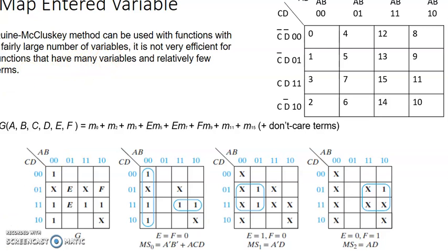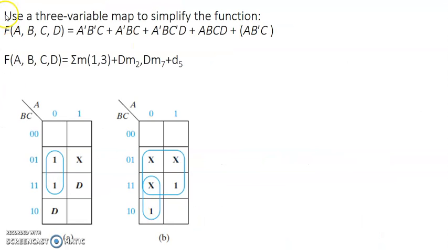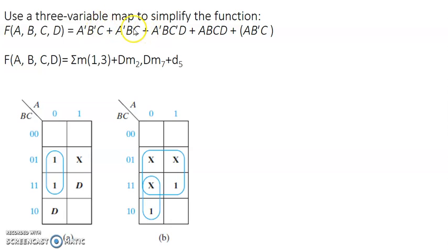With this method we can reduce the drawback of Quine-McCluskey when there are many variables and relatively few terms. If the terms are very many, then we need to use Quine-McCluskey. Moving to the next problem: use a three-variable map to simplify f(a,b,c,d) = ā·b̄·c + ā·c·b·c + ā·b·c̄·d + a·b·c·d, with (a·b̄·c) as a don't care.